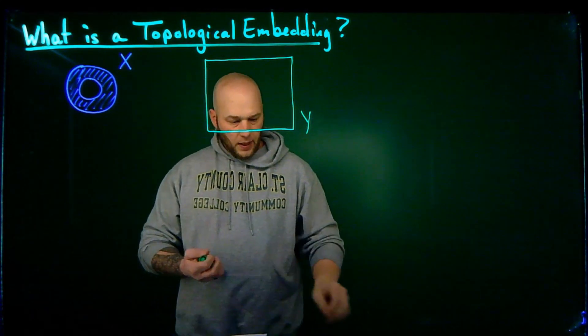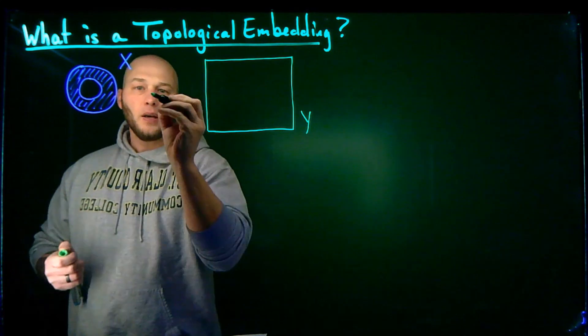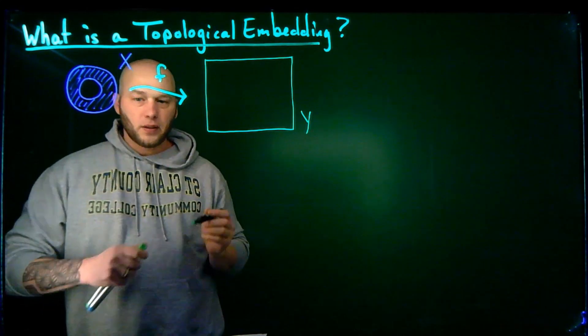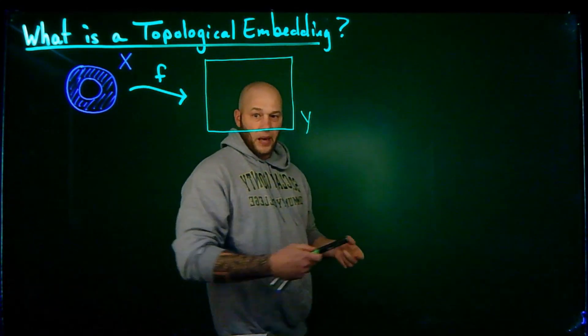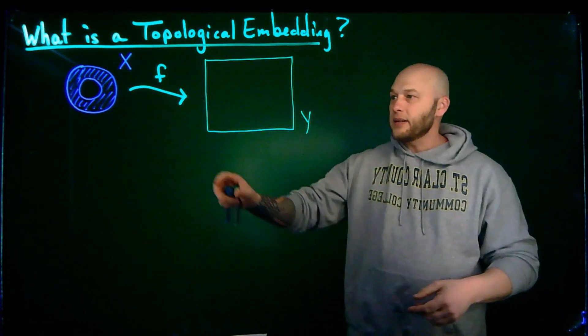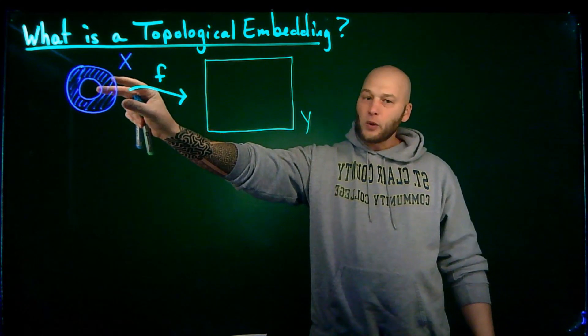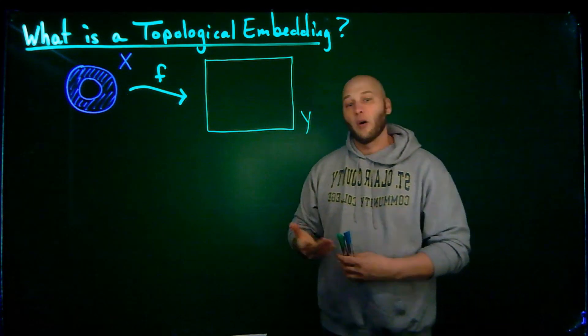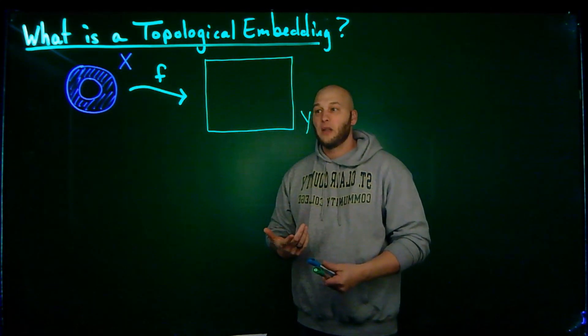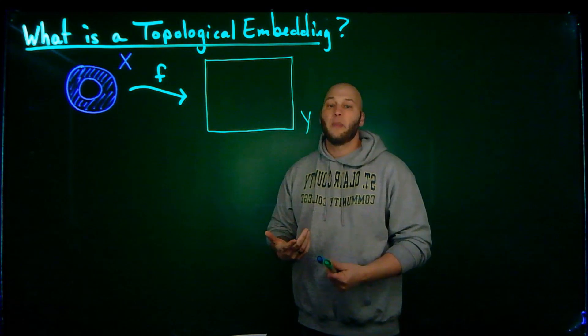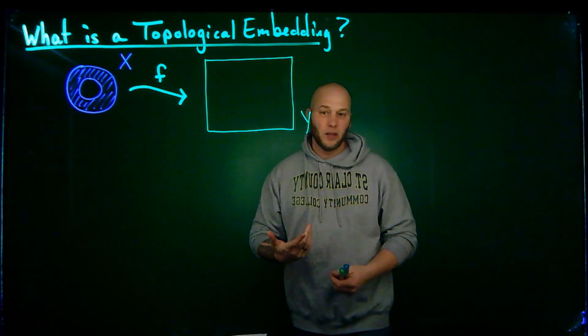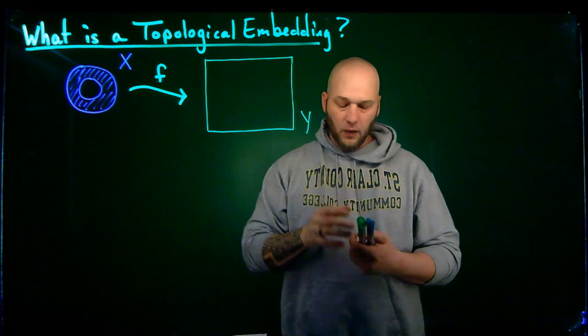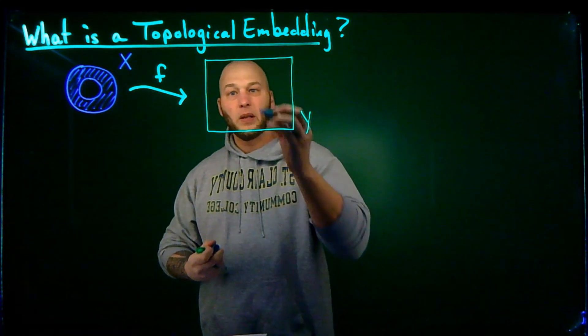And then what I'm going to do is I'm going to take a function between these two that I'll just call F. That's going to represent the embedding itself. And the idea is I could take this topological space X and I want to put a homeomorphic copy inside of Y. Now, remember, homeomorphic means that they're topologically equivalent. It does not mean that they're geometrically equivalent. So that doesn't mean that I'm going to pick this exact shape up and pop it inside of here. But I could have something like the following.